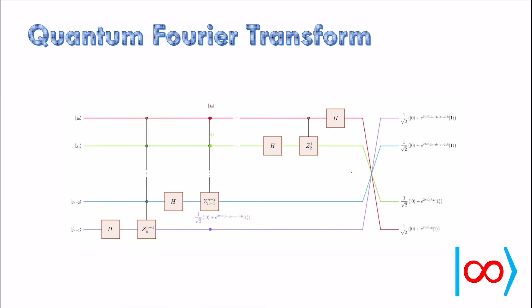Before applying controlled rotations, Hadamard gate is applied to each qubit to create the superposition with an added advantage that the first bit in decimal part comes for free. This completes the description of quantum Fourier transform.